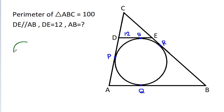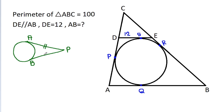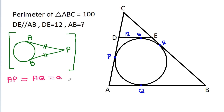Then, in any circle, from any point P, if PA and PB are tangents, then PA will be equal to PB. So here, from point A, AP will be equal to AQ. Suppose AP is 'a' and AQ is 'a'. And from point B, BQ will be equal to BR. Suppose BQ is 'b' and BR is 'b'.